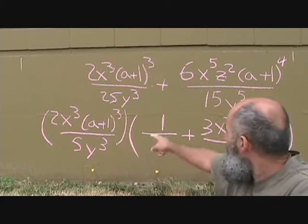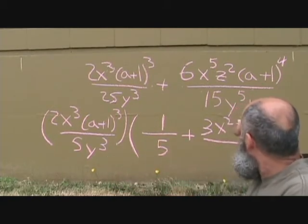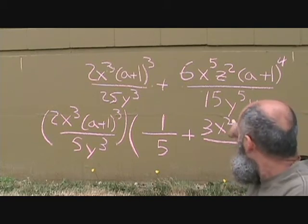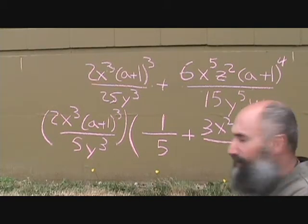And for the denominator, we have 5y cubed. We've got 15y to the power of 5w. So we need a 3, and we need a y squared, and we need a w.